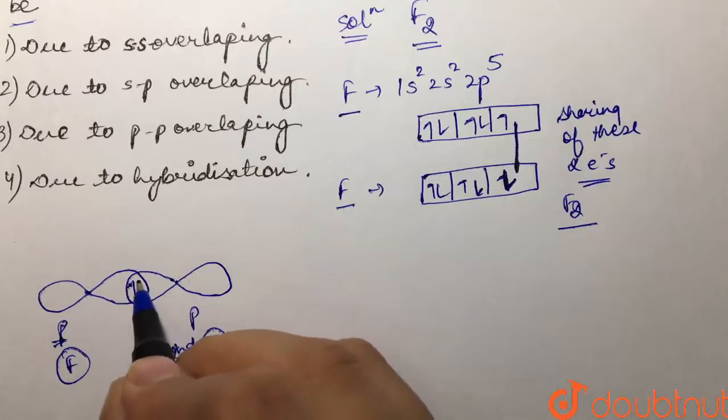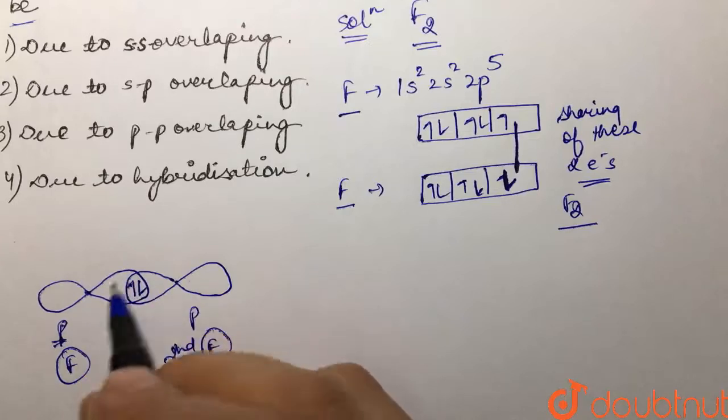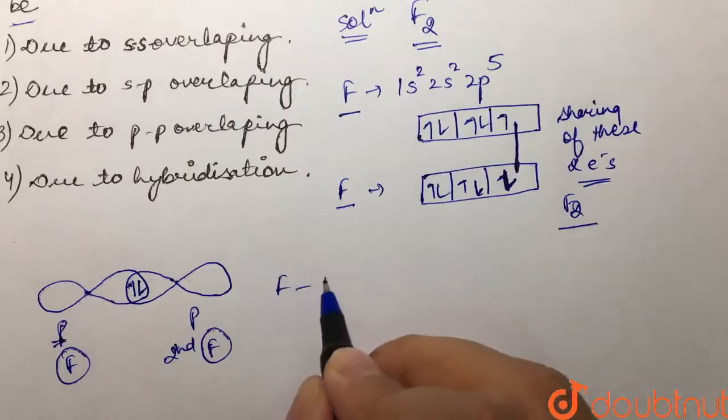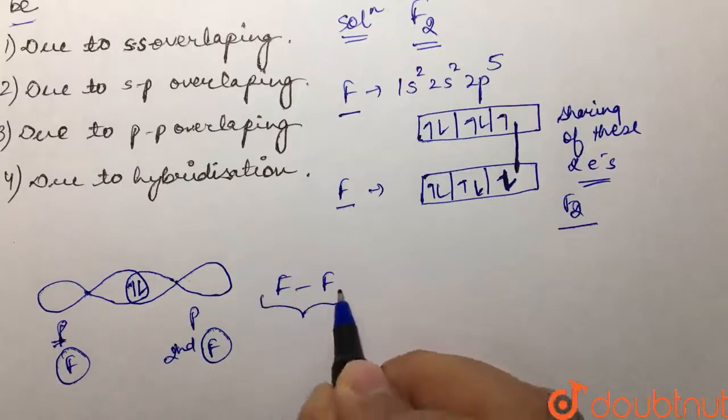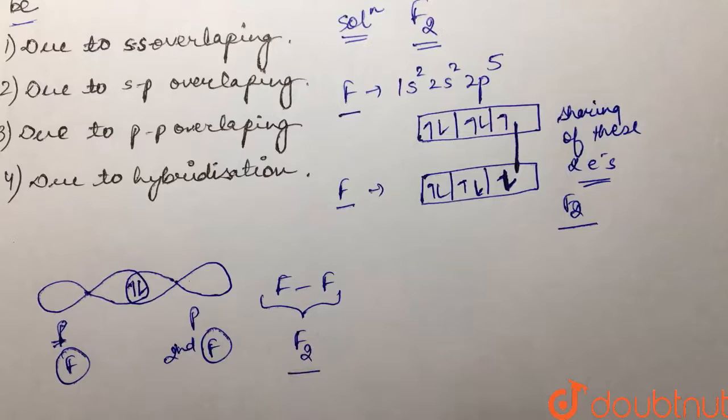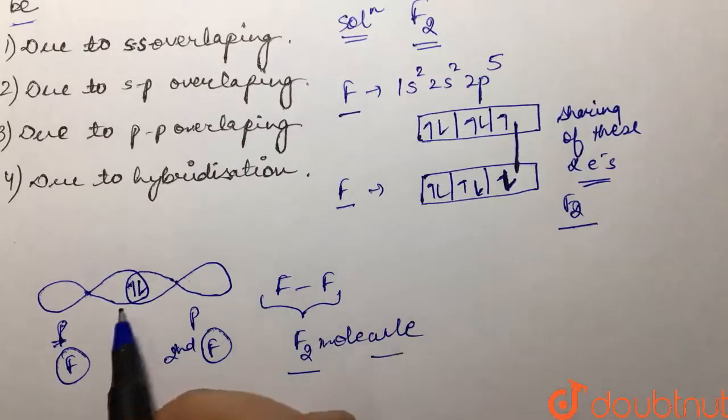One electron is present in this orbital and the second electron is present in this orbital. So there is sharing of this electron pair between our fluorine-fluorine atoms, and hence we can say that there is formation of fluorine molecule.